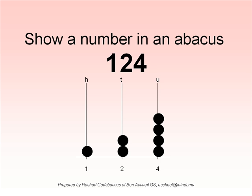For 124, you will place one bead in the 100 column, two beads in the 10 column, and four beads in the unit column.